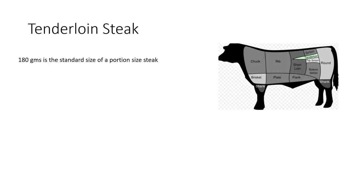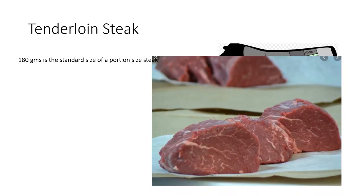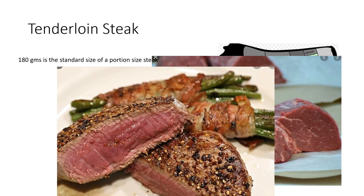The standard size of a tenderloin steak is 180 grams. When you cut the tenderloin across and then grill it, the resulting steak cross-section shows the doneness: if a little redder it is rare, the coloration shown here is medium done, and the outside coloring is called well done.